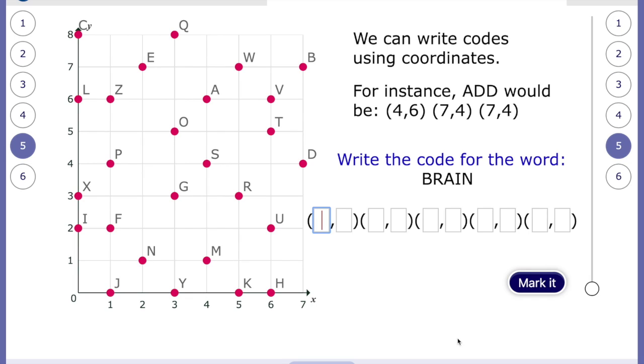And can we write the word for brain? Once again, pause the video. Write down the coordinates for B, R, A, I and N. And when you're done, start the video again and see if you're right. Pause the video now. So let's have a look. Brain. Let's think of B. Here's B. So B is seven, seven.